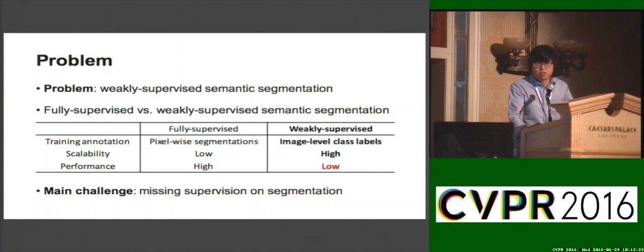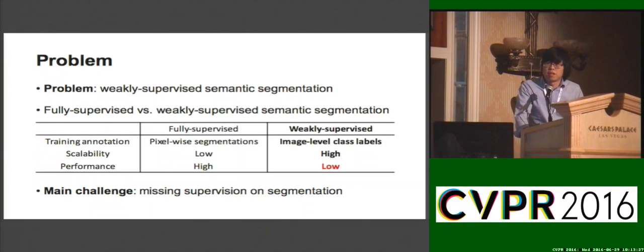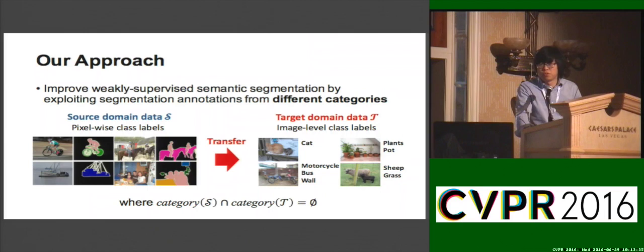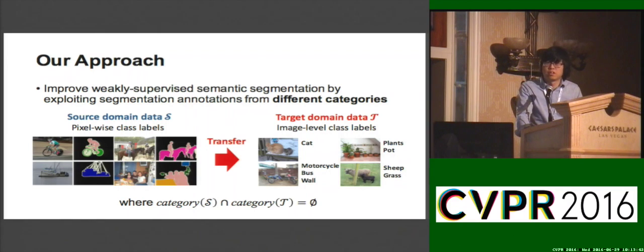However, performance is usually much worse than fully supervised methods, mainly because there is no direct supervision for segmentation. To tackle this problem, we propose to employ segmentation annotations available from different categories to compensate the missing supervision in weakly annotated data.